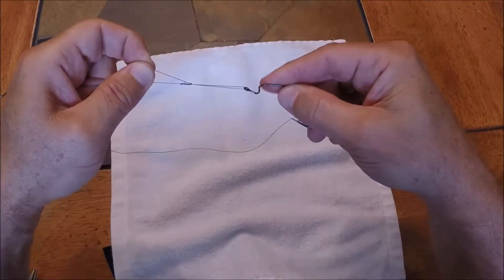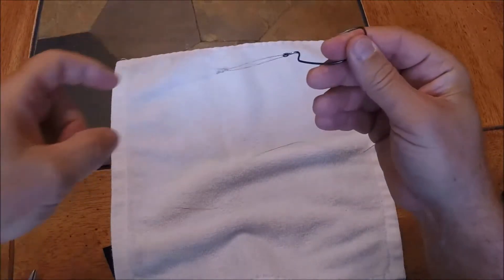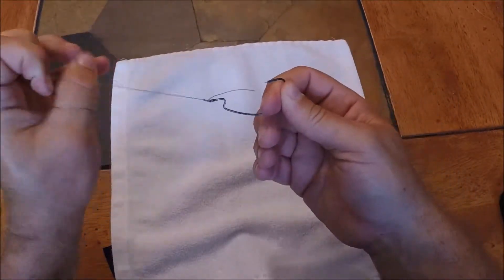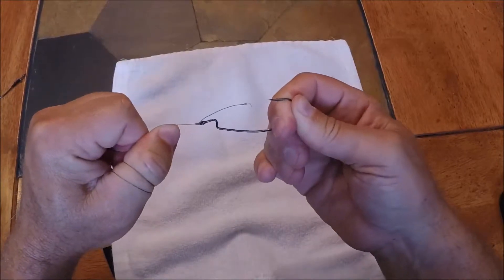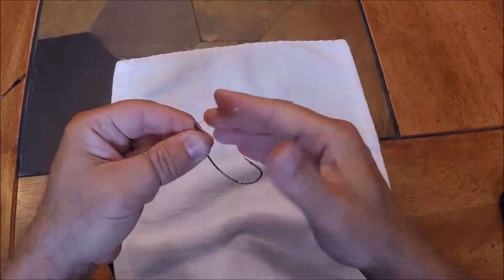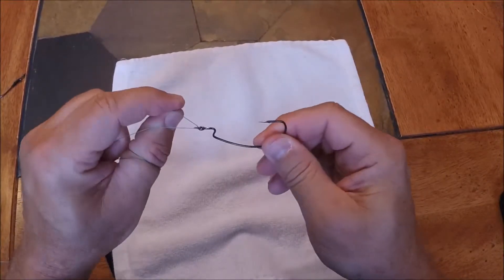Again, if this were monofilament or fluorocarbon I would wet the line. With a braid you're not going to have line burning. I snug it down, pull it extremely tight, pull your tag end and trim. That's the improved clinch knot.